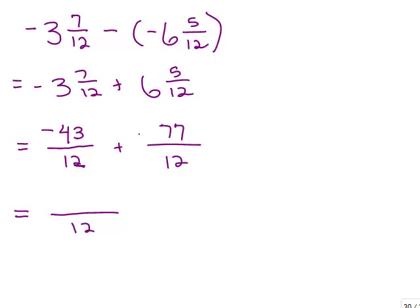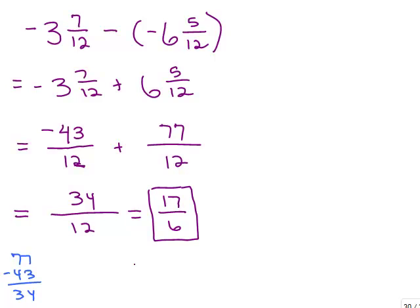I need to do negative 43 plus 77. I'm adding a negative and a positive — 77 is bigger than 43, so the answer is positive. I do 77 minus 43, which is 34. My answer is positive 34 twelfths. That's not fully reduced — dividing top and bottom by 2 gives 17 sixths. Written as a mixed number, that's 2 and 5 sixths.